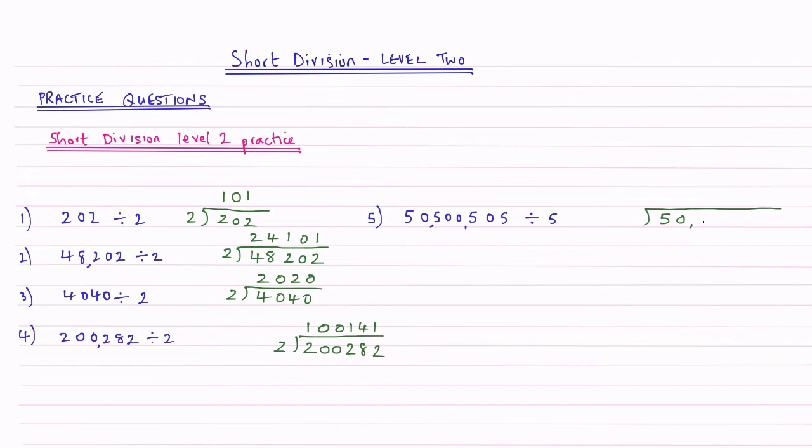So 50,500,505. It doesn't matter if you don't put the commas in. Makes no difference. Dividing that by 5.